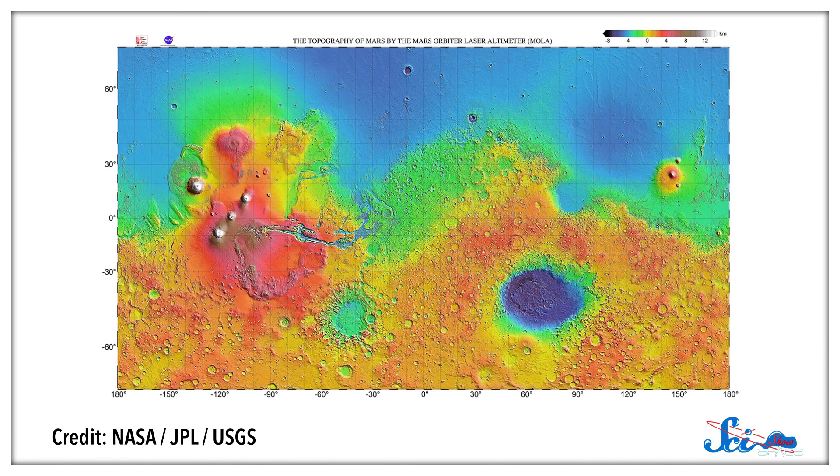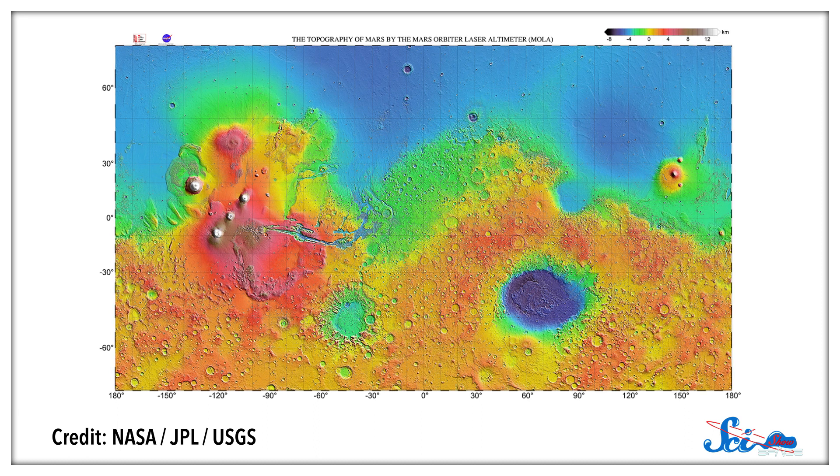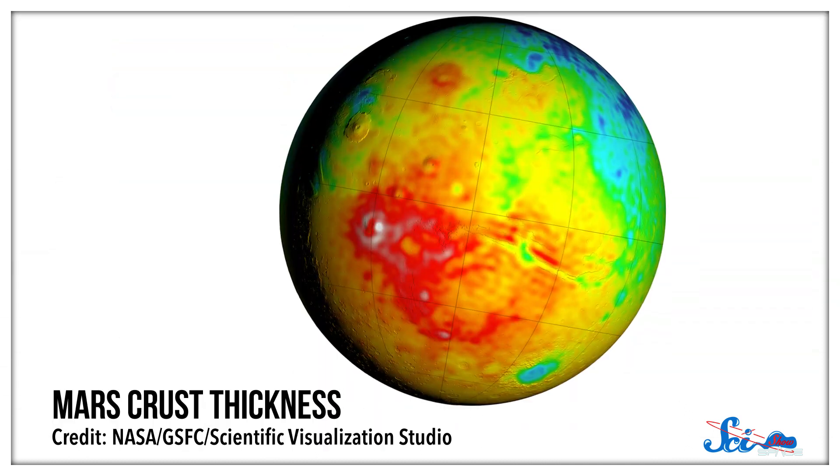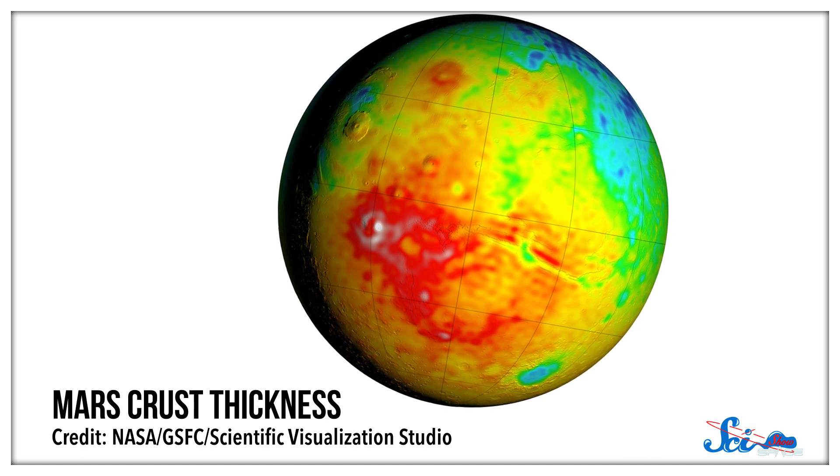Its northern hemisphere is smooth and almost featureless, but its southern hemisphere is dark, craggy, and marked with craters and chasms. The southern highlands are also three to eight kilometers higher than the northern plains, and the crust is twice as thick.